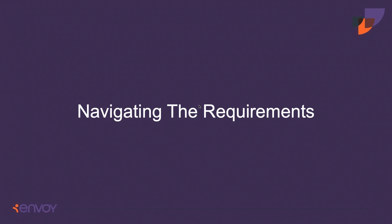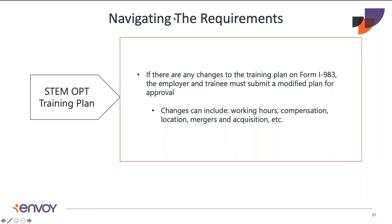To provide a few examples of material changes that would warrant reporting to the DSO at the F-1 student's school: these include any changes to the employer identification number resulting from a corporate restructuring; a reduction in student compensation that is not tied to a reduction in hours worked; any significant decrease in hours worked per week; and changes to the employer's commitments or the student's learning objectives as documented on Form I-983.